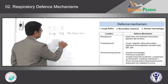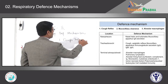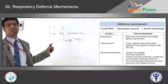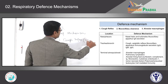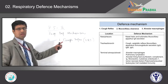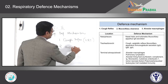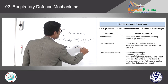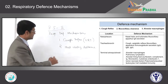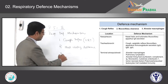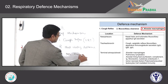The first defense mechanism is the Cough Reflex, which is mainly in the upper respiratory tract but may also be present in the lower respiratory tract. The second defense mechanism is Mucociliary Clearance. The third and last defense mechanism is the function of alveolar macrophages.